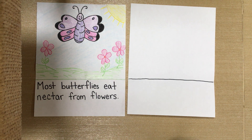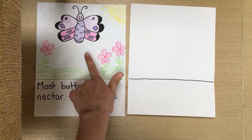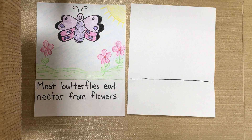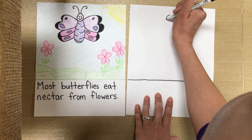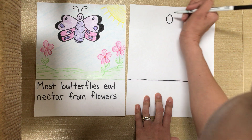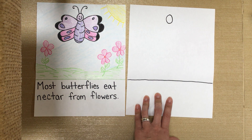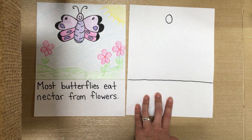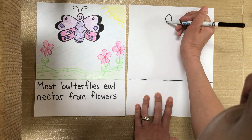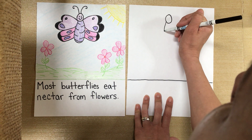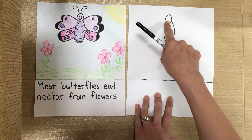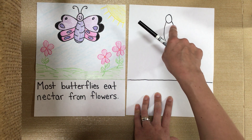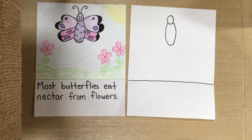Now that everybody has their line drawn, we're going to get started with drawing our butterfly. This is an example of what your picture might look like when it is all done. So the first thing we're going to do is take our pen or pencil, whatever we're using to draw with, and we're going to draw a circle for the head of our butterfly. So everybody draw a circle. It's okay if it's not perfect and nobody's pictures are going to look exactly the same. That's going to be the head. I'm going to draw kind of like an oval and that's going to be the body of my butterfly. I started here at the head, went down and all the way around.